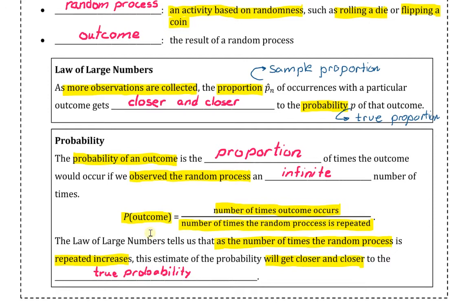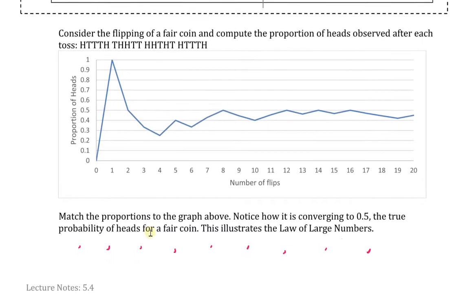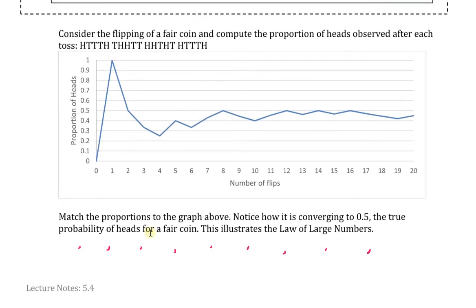Let's look at an example. Consider the flipping of a fair coin, and imagine we want to compute the proportion of heads observed after each toss. A fair coin has one head and one tail. If we were to flip a fair coin, I do not think we would expect the coin to land on a head, then a tail, then a head, then a tail, back and forth.